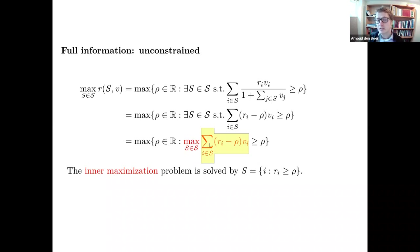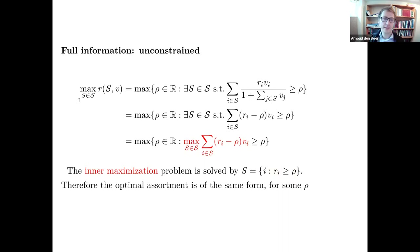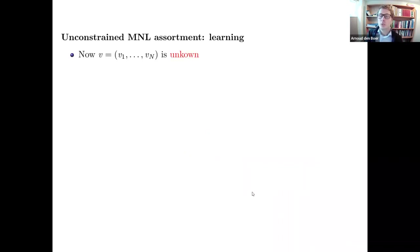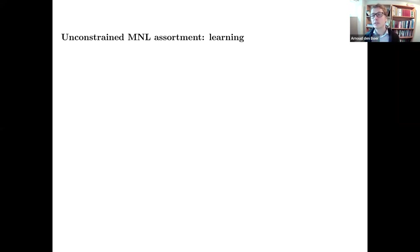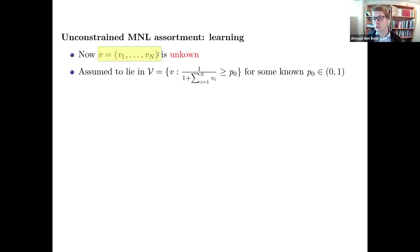So the optimal assortment is of the form: offer all products with revenue at least some threshold ρ — equivalently, offer the k most expensive products for some k. This structure holds for the unconstrained problem. Now suppose the valuations v are unknown — what should we do?